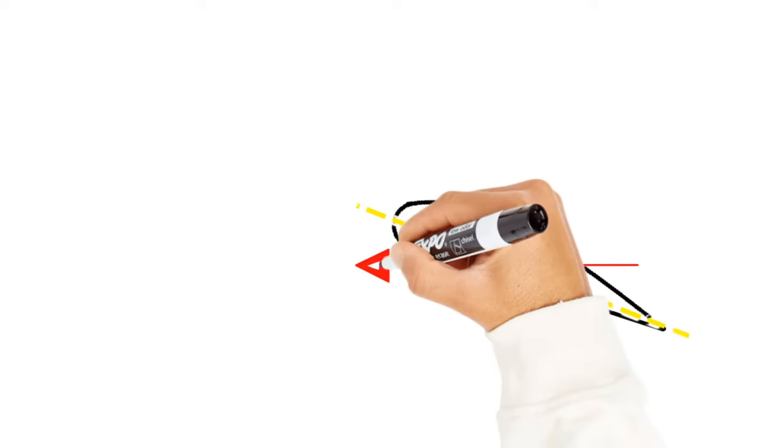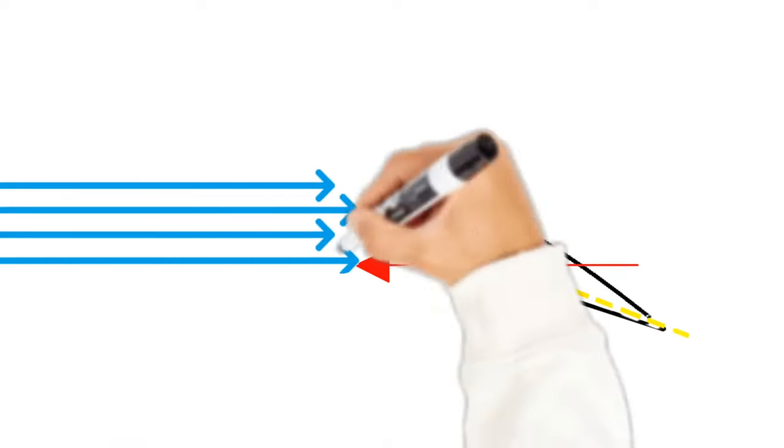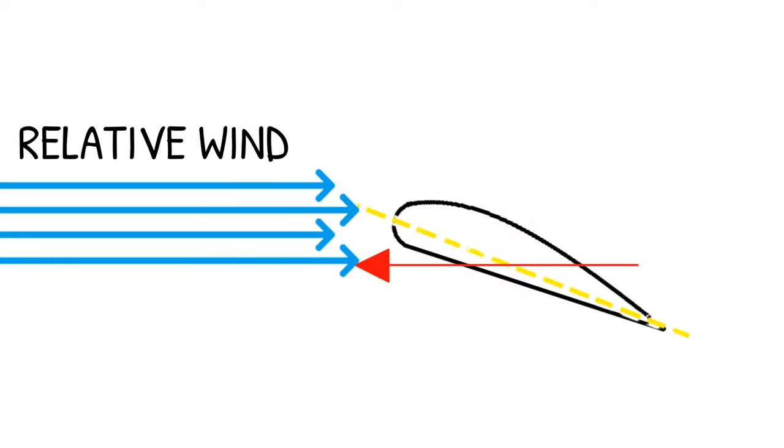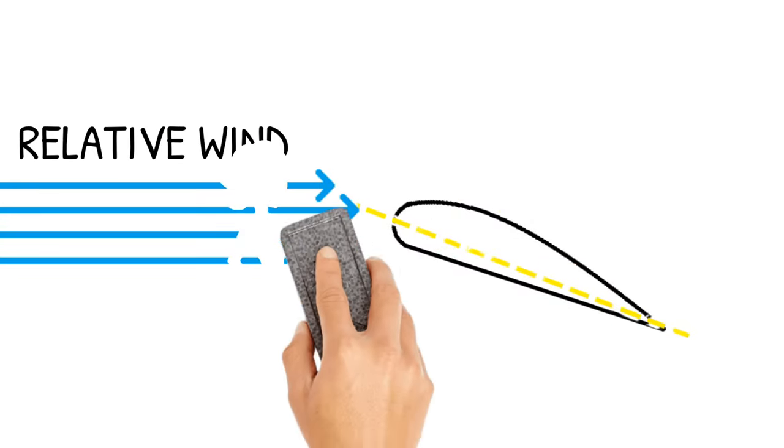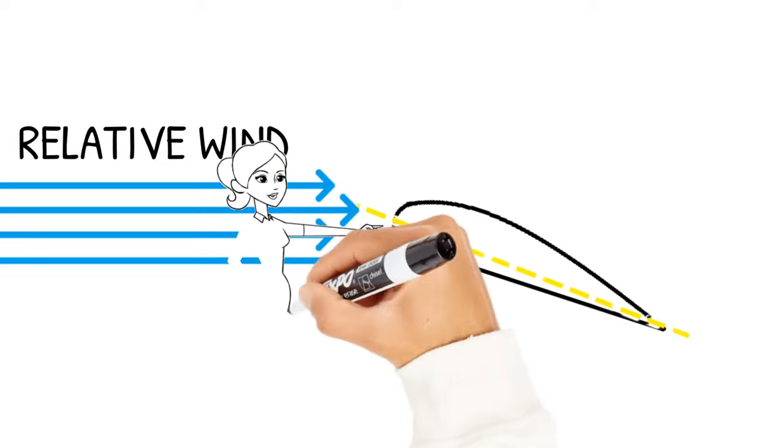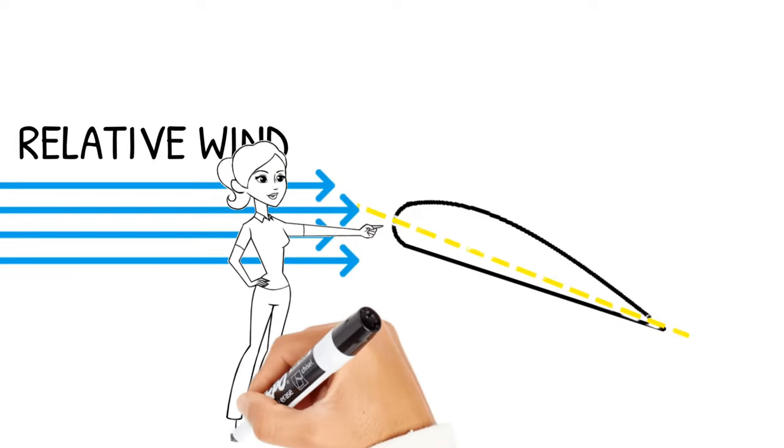Anytime an airfoil is in flight, it creates an opposite moving force known as relative wind. It's this relative wind, along with the shape of the wing, that causes the airplane to be able to fly, just like we learned in the last lesson.